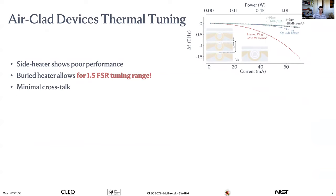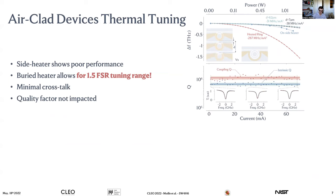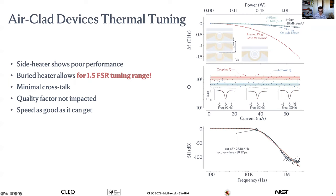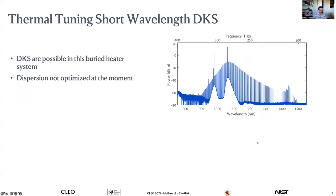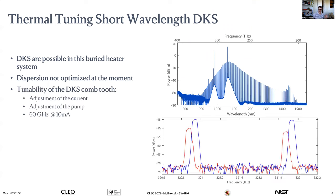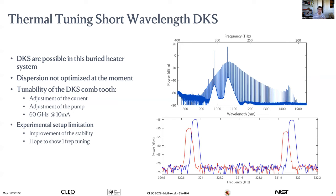The buried heater also shows very minimal thermal crosstalk, and the Q-factor is not significantly impacted across different injected electrical power levels. Speed is thermally limited, so it is relatively slow. We demonstrated DKS generation through this buried heater — though dispersion is not yet optimized — and showed comb tunability with only 10 mW of injected power producing a 60 GHz shift. We adjust the current waveform to generate the DKS and hope to improve system stability in the future.